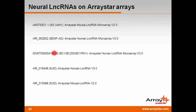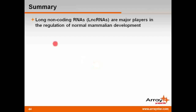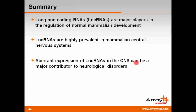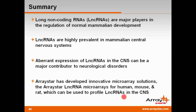Not only do lncRNAs play major roles in nervous system biology, but the ArrayStar lncRNA microarrays offer industry-leading tools for lncRNA expression profiling in neurobiological studies. Today I told you that lncRNAs have recently emerged as major players in the regulation of gene expression for normal mammalian development, that lncRNAs are highly prevalent in mammalian central nervous systems, that aberrant expression of lncRNAs in the CNS can be a major contributor to neurological disorders, and that ArrayStar has developed innovative microarray solutions — the ArrayStar lncRNA microarrays for humans, mouse, and rats — which can be used to profile lncRNAs in the central nervous system.